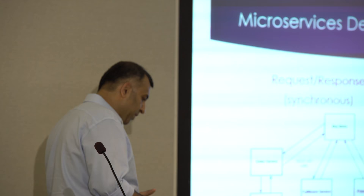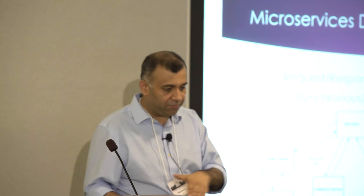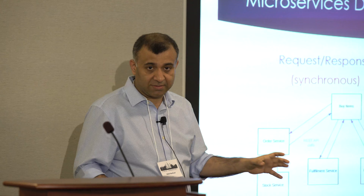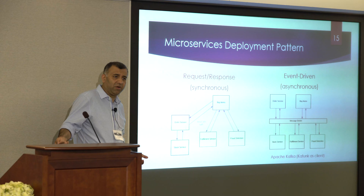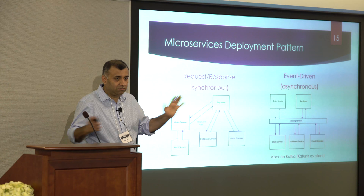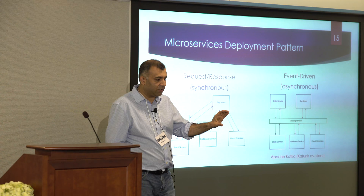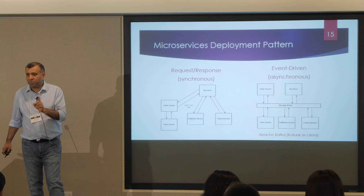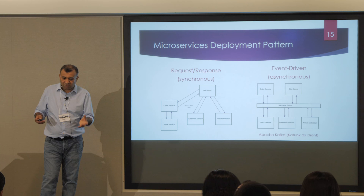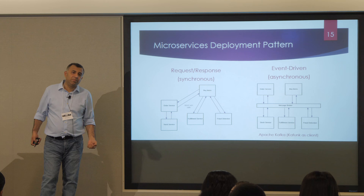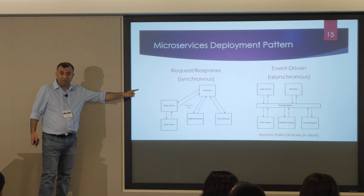We divide services into three tiers. Tier one: if it goes down it impacts the customer significantly — like pricing; if that's down for two hours, the site is non-operational. Tier two: impacts the customer but not severely — like order management; orders would be delayed but you can still place them. Tier three: practically no customer impact — like a monitoring service. Tier one services tend to use request-response for reliability; tier two and three generally use event-driven.